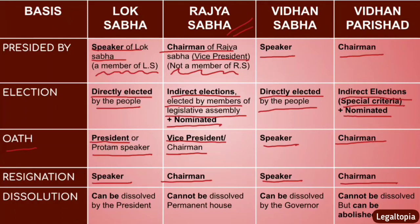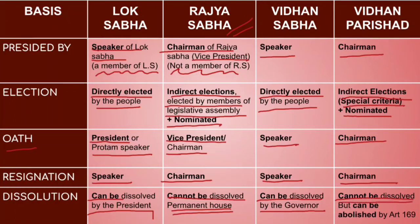On dissolution: Lok Sabha can be dissolved by the President. Rajya Sabha cannot be dissolved — it is a Permanent House. Vidhan Sabha can be dissolved by the Governor. Vidhan Parishat also cannot be dissolved, but it can be abolished under Article 169 of the Constitution. Remember the difference between abolished and dissolved: dissolved means it can be reconstituted; abolished means the entire house is dismantled.